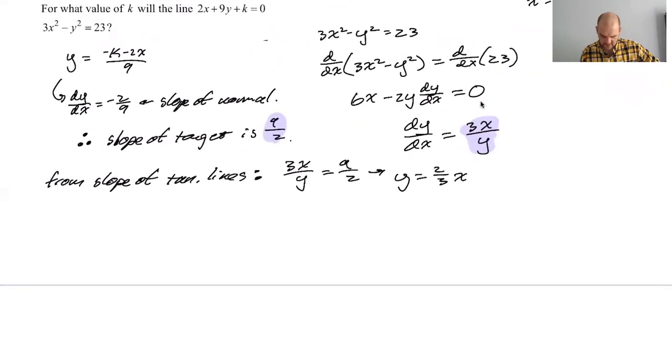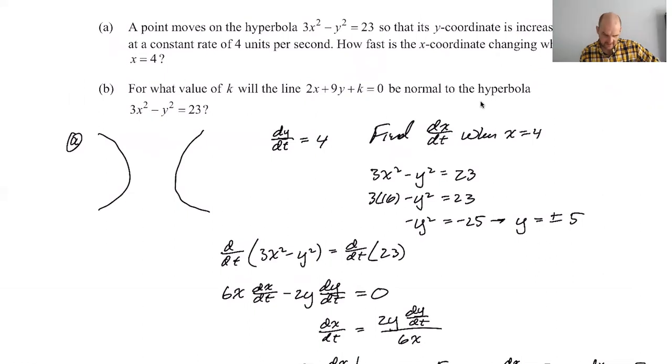So we know the slope of the tangent line two different ways. So now I know that since they're both the slope of the tangent line, this is equal to this. It occurs to me that I don't really know what I'm trying to solve at this point, but from the slope of the tangent lines, I now know that 3x over y equals 9 over 2, or y is equal to 6x over 9, two thirds of x. And then I assume I'm supposed to take that and plug it back in. For what value of k?